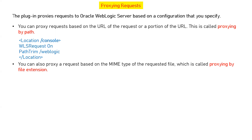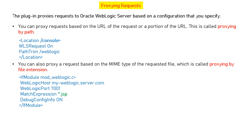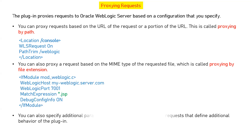The second type is proxying by file extension. For example, if you have a lot of HTML files or JSP files which you want to redirect to your application server, you can define a particular context as shown on the screen — that is called proxying by file extension. Here, JSPs deployed on a WebLogic managed server — or maybe the admin server running on port 7001 — all JSP requests in the URL will be redirected to that particular server. You can also specify additional parameters for each of these types of requests that define additional behavior of the plugins.